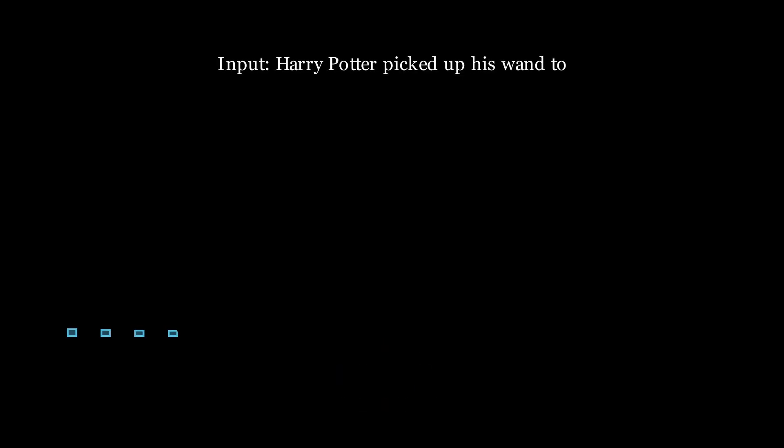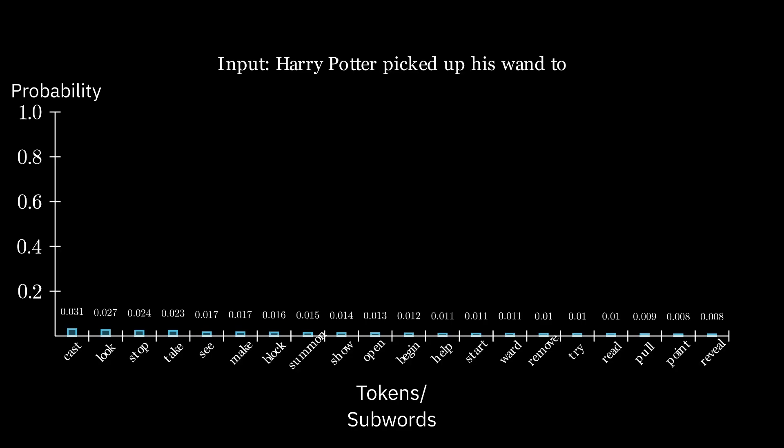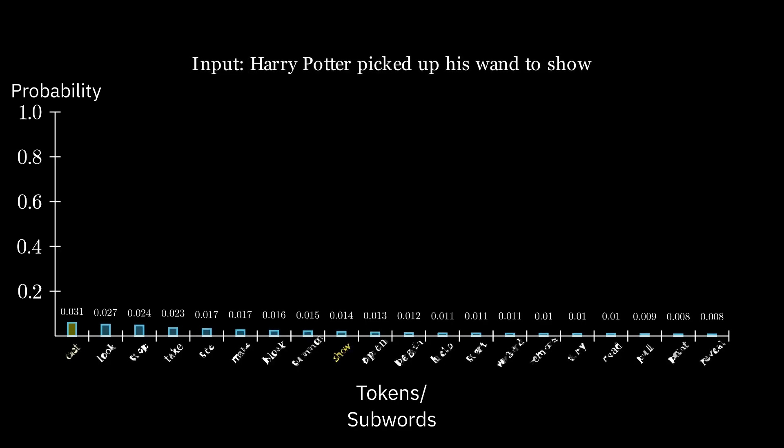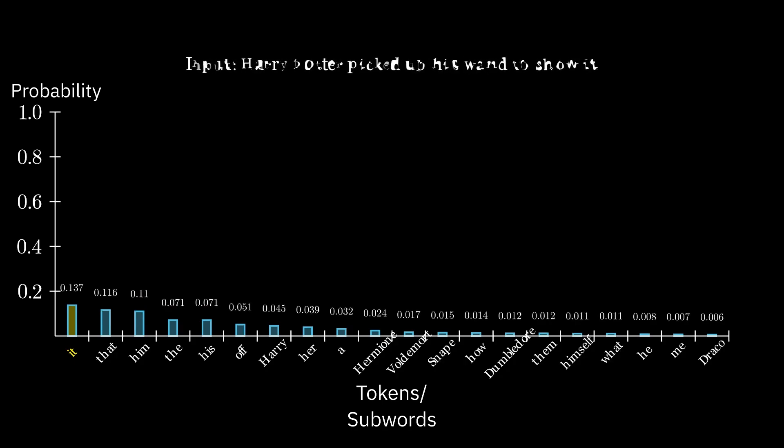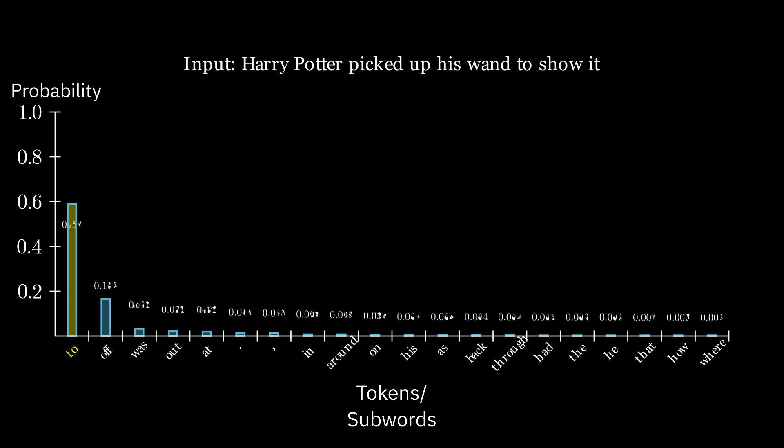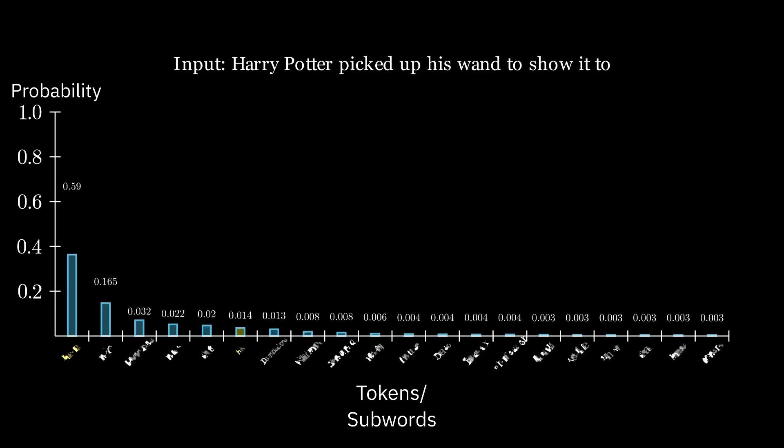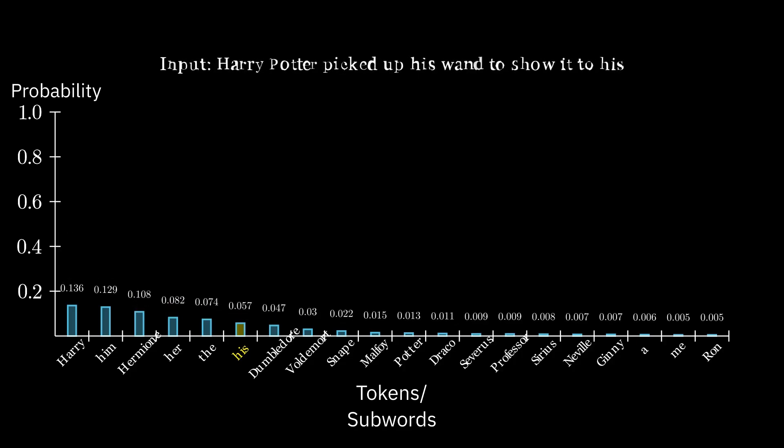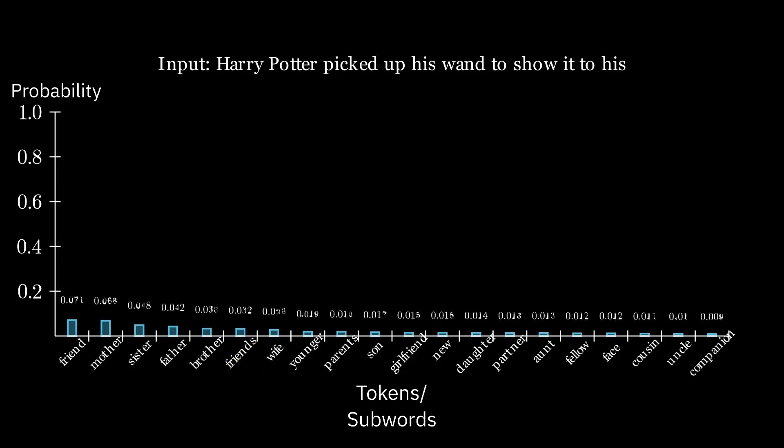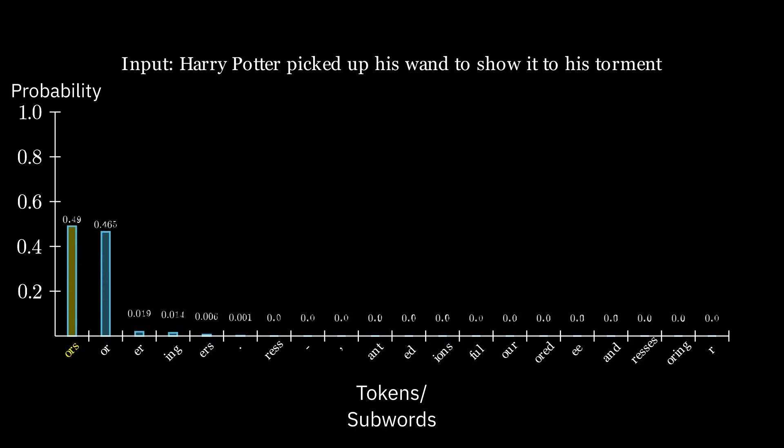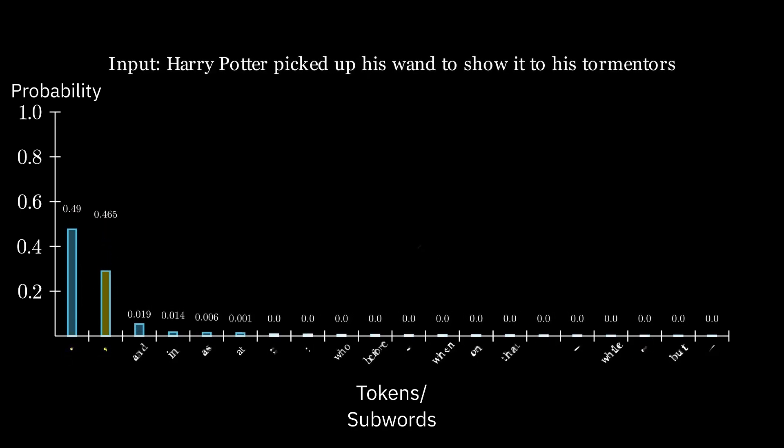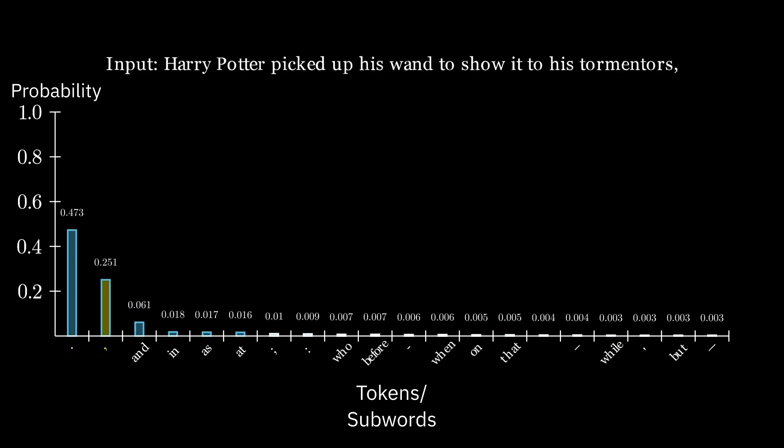Going back to the Harry Potter text example, let's see how random sampling works. We see that tokens are being picked randomly based on their probability weights. Random sampling decoding involves selecting the next token probabilistically based on the model's predicted distribution, allowing for more diverse and creative text while avoiding overly repetitive or deterministic outputs.